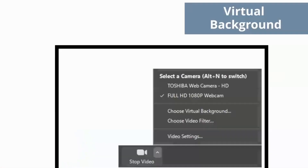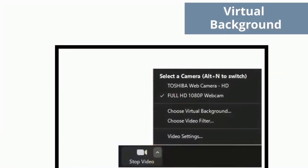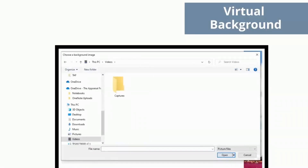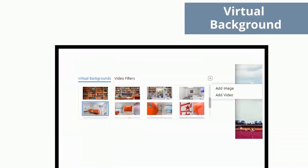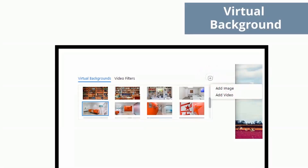To set up your virtual background, click on the upside down caret next to the video button on your Zoom toolbar and choose virtual background. From here, you can choose a background that is preloaded into Zoom, or click on the plus button to add your own background. Please note that the photo you want to use may need to already be saved on your computer for you to access it and add it as your Zoom background.